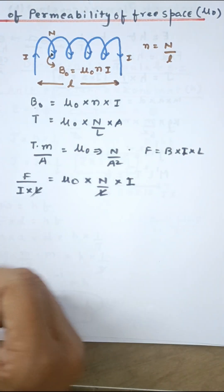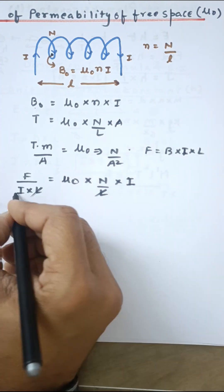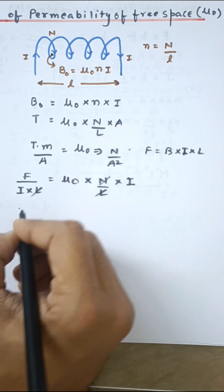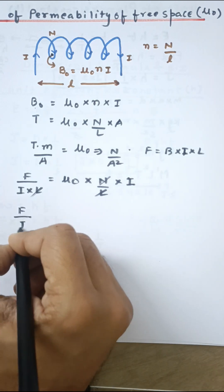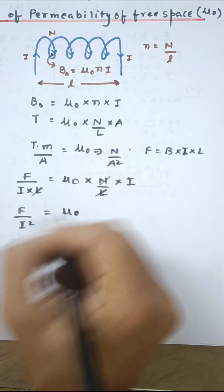Now this length goes off. Now this force can be written as—by the way, let me pull this down over here. This does not have any unit. So force upon current square, that will be the dimensional formula.